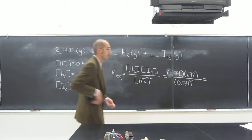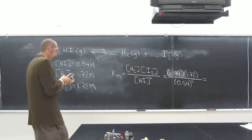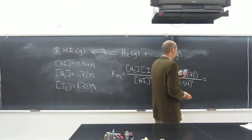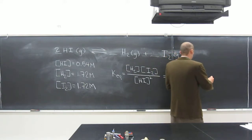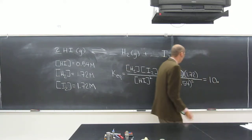So that's going to be equal to, get out your calculator. 1.72 times 1.72 divided by 0.54. So what'd you guys get? Yeah, so it's going to be 10. Okay, because of this.